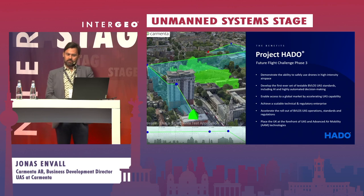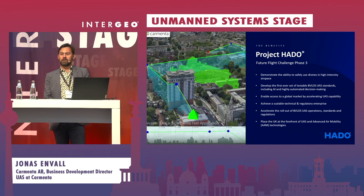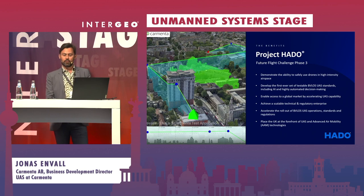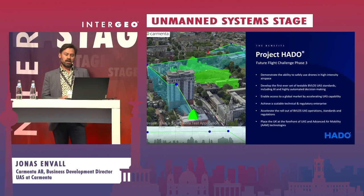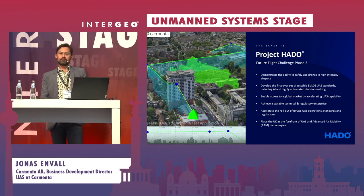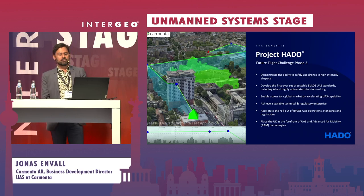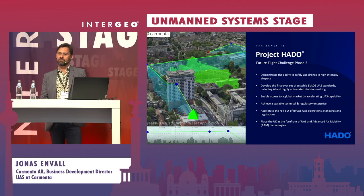Finally, I want to tell you about the project we're currently part of that implements most of these concepts. It's a project funded by Innovate UK as part of the Future Flight Challenge program in England. It's called HADO, and we are part of a consortium including Heathrow Airport, OSL, Thales, and Heritage Gate. The aim of this project is to conduct live autonomous BVLOS flights in the last four months of the project — which will be next spring/summer — and also to give recommendations to legislation authorities on how to move forward with legislation that supports this in a good way.